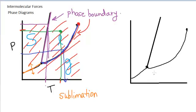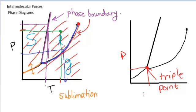One feature we want to look at is this point where all three of the phase boundaries come together. This is known as the triple point. The triple point represents the pressure and the temperature — we can talk about the pressure at the triple point and the temperature at the triple point — at which all three phases, solid, liquid, and gas, are in equilibrium with each other.